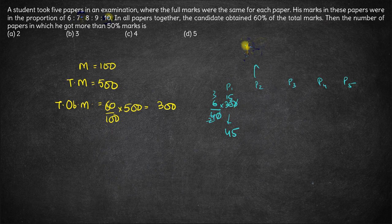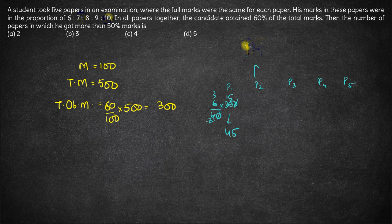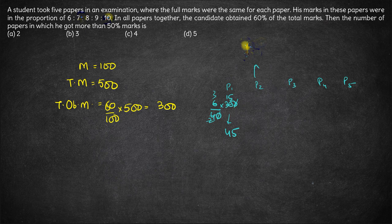210 upon 4. So now 210 upon 4 is approximately 52.5. Now this itself is 52.5, right?